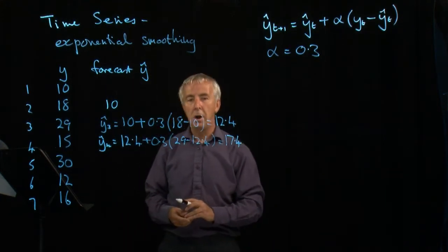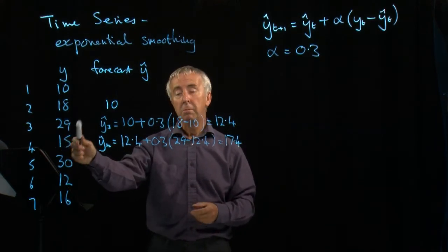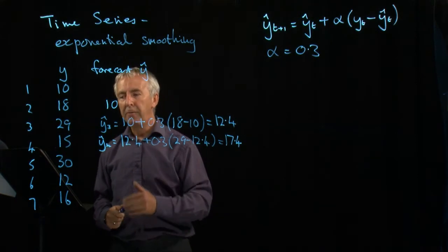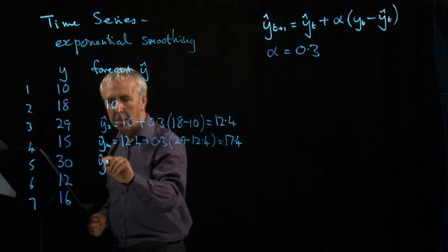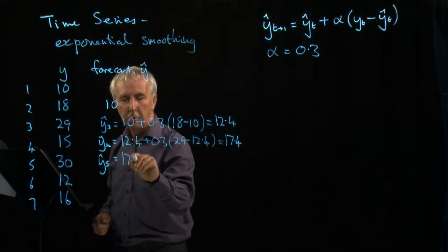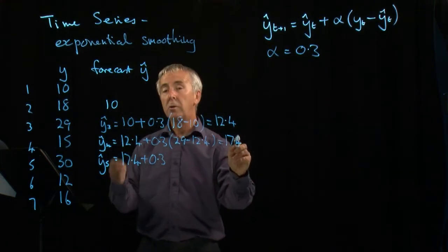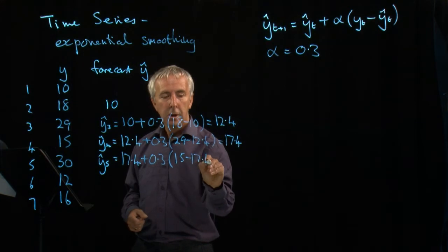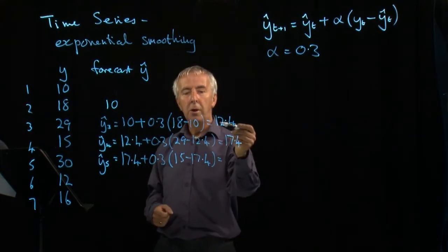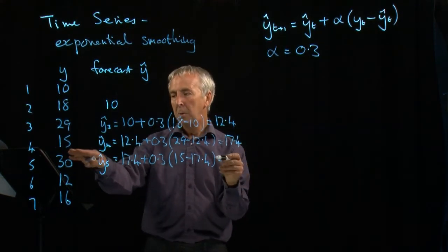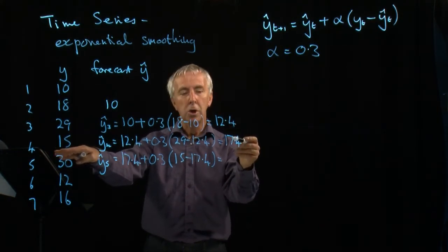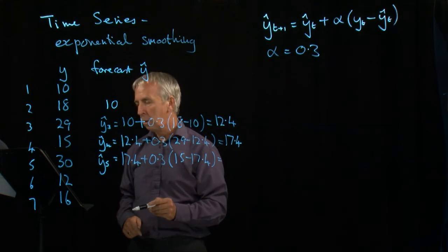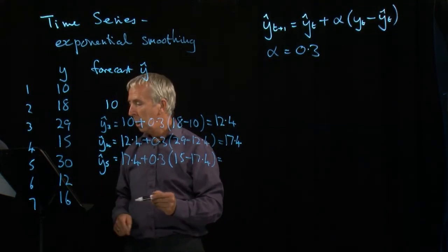So our forecast for the next time is 17.4. We actually got 15, so we're not too bad. We're tracking the actual data reasonably well. What's my forecast for time 5? Well, my previous forecast was 17.4, and actually that was too high because I only got 15. So this time the error will turn out to be negative. 15 minus 17.4. I need to bring my forecast down because it was too high. We actually know that the real answer is going to be 30, but before we know that, our best estimate is to reduce 17.4 down towards 15. So this is minus 2.4 multiplied by 0.3, add on to 17.4, and we get 16.7.